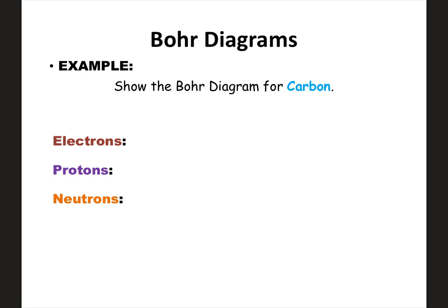We're going to do a Bohr diagram for carbon. The first thing we need to do is figure out the number of each subatomic particle. Carbon is element number 6, so it has an atomic number of 6, meaning 6 protons. There's no charge, so it has 6 electrons. The atomic mass rounds to 12, so 12 minus 6 protons gives 6 neutrons. Carbon has 6 protons, 6 electrons, and 6 neutrons — it really is a unique element.